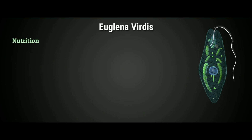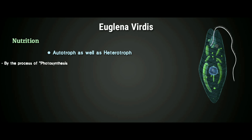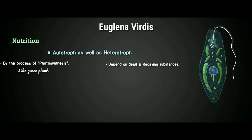Nutrition: As we know, Euglena viridis is both autotroph and heterotroph. As an autotroph, in sunlight they prepare their own food by the process of photosynthesis. As a heterotroph, it loses its autotrophic character and becomes pale or white in color, depending on dead or decaying substances.